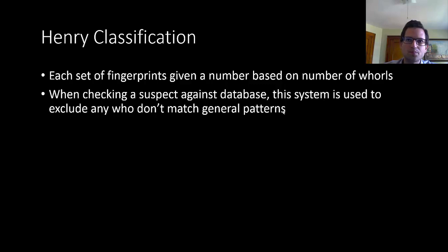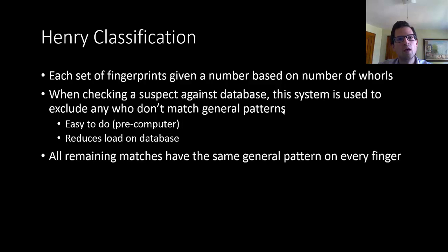So there's a different number given to each possible combination of whorls or no whorls. You can check that against the database and exclude anyone who doesn't have those general patterns. If I have a whorl on my left middle finger and the person you're checking me against doesn't, then you don't need to go any further. This is easy to do, even pre-computer. It reduces the load on databases. The results from such a comparison would be matches that have the same general pattern on every finger.